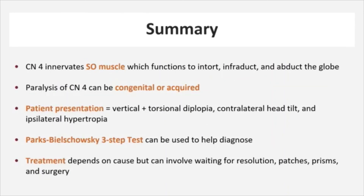To end our talk, let's review the key points. Cranial nerve 4 innervates the superior oblique muscle, which functions to intort, infraduct, and abduct the globe. Paralysis of this nerve can be congenital or acquired. Patients with cranial nerve 4 palsy will present complaining of vertical intorsional diplopia. They'll often tilt their head away from the affected side to minimize diplopia, and the affected eye will be hypertrophic relative to the unaffected eye. We talked about the Park-Skoschowski test and how its three steps can be used to identify the non-functional muscle. However, remember that this test isn't very effective if multiple extraocular muscles are involved. Finally, patches, prisms, and surgery can be considered for symptomatic patients.